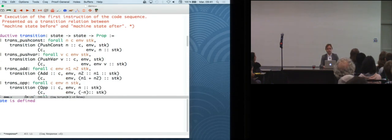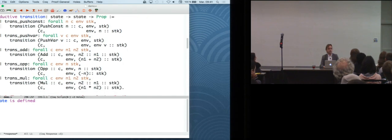And the transitions of the machine, so it's one of those inductive relations between the state before and the state after the transition. And there's five possible transitions corresponding to the five possible instructions you can have at the beginning of the instruction sequence. So for instance, if your instruction sequence starts with a push const n in some environment and some stack, then in one execution step, you transition to code C, where the instruction push const n was consumed, the same environment, and the stack with n being pushed on top of it. For a push var, it's similar. It's only that you push the value n for v. And for add, for instance, you need at least two things at the top of the stack, n2 and n1, OK, and then you replace them by their sum.